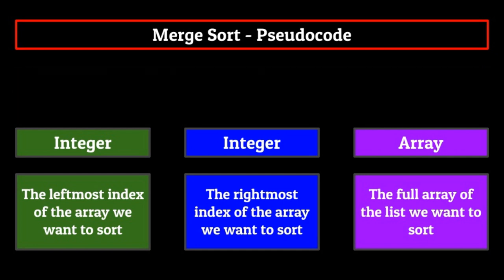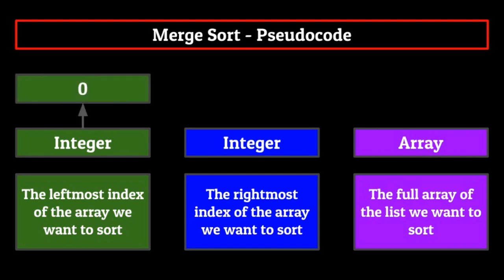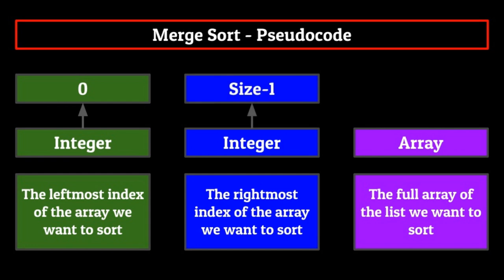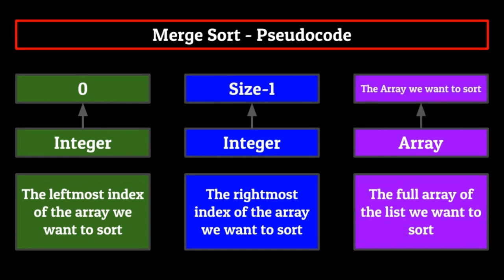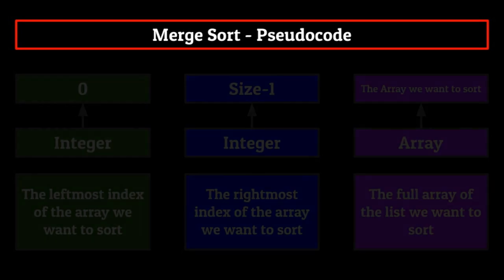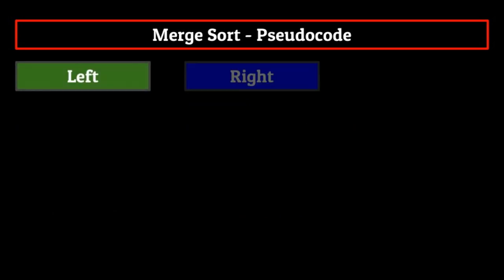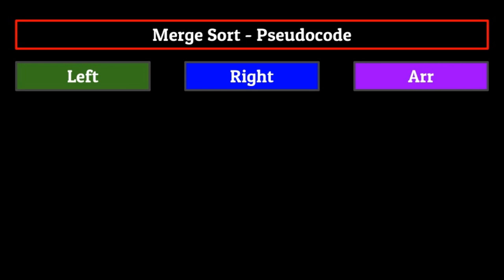The first time we call merge sort on a list, these will be hard-coded by the user, typically passing in zero as the leftmost index, the size of the list minus one as the rightmost index, and of course the full array as the array. This is important to mention because we are going to use recursion within our code, and for each of these recursive calls, we'll have to have the computer calculate these points instead of having them hard-coded. So we start with the leftmost and rightmost points of the array, which I'll call left and right, as well as the array, which I'll abbreviate to ARR.